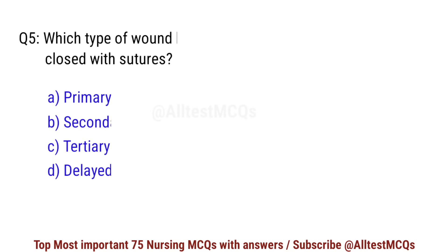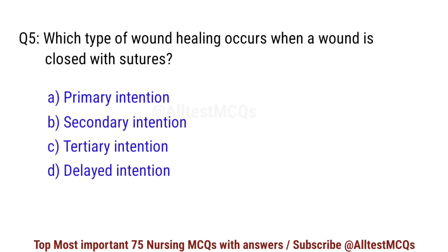Question number 5. Which type of wound healing occurs when a wound is closed with sutures? Right option is A: Primary intention.